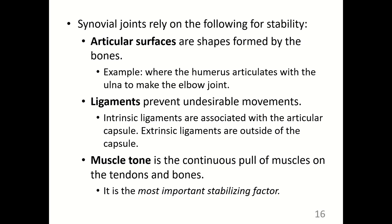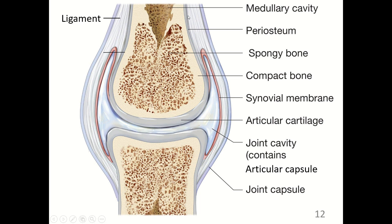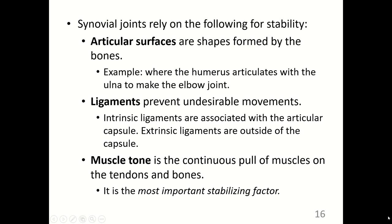Synovial joints rely on the following for stability. Articular surfaces are the shapes formed by the bones — for example, where the humerus articulates with the ulna to make the elbow joint, relating to bone markings from the previous chapter. Ligaments prevent undesirable movements; there are both intrinsic ligaments associated with the articular capsule and extrinsic ligaments outside of the capsule. Muscle tone — the continuous pull of muscles on the tendons and bones — is the most important stabilizing factor, which is another reason to maintain good muscle structure so muscles can react and stabilize the skeleton.